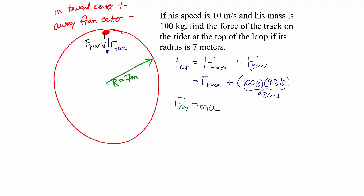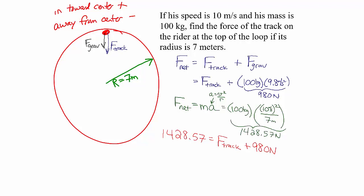The net force also equals mass times acceleration. Because it's moving in a circle, the acceleration is v² divided by r. The net force is 100 kilograms times (10 m/s)² divided by 7 meters, which equals 1,428.57 newtons. Setting the two expressions equal: 1,428.57 = force of track + 980 newtons. So the force of the track at the top of the circle is 448.57 newtons.